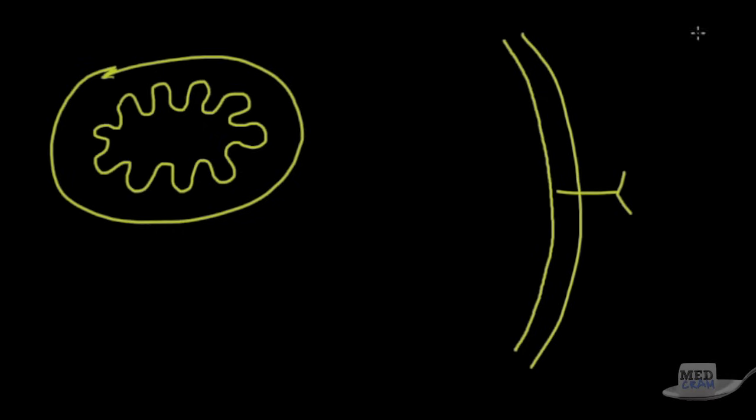Now remember where things are. You've got glucose outside the cell that wants to move inside, and you've got fatty acids as well. I'll draw a fatty acid here.